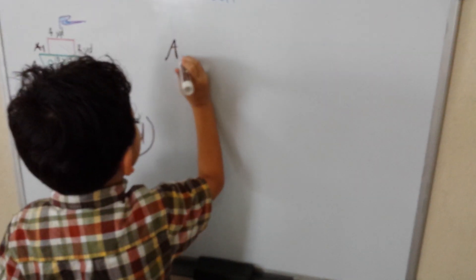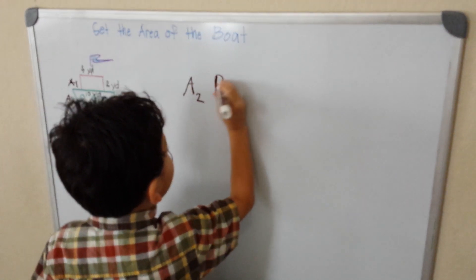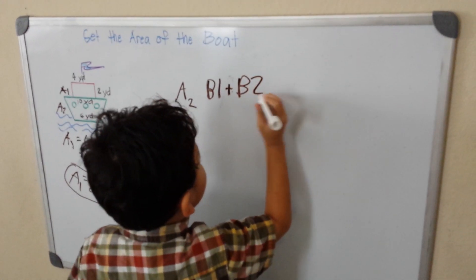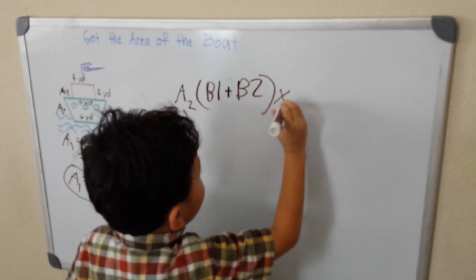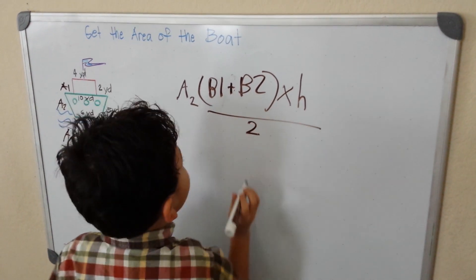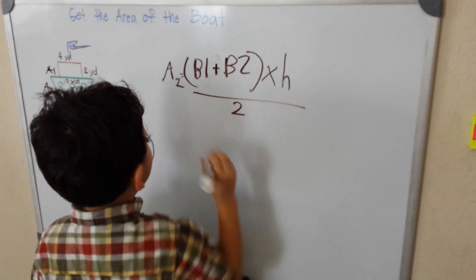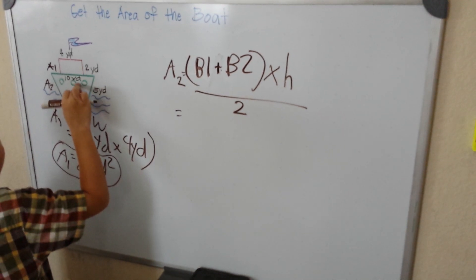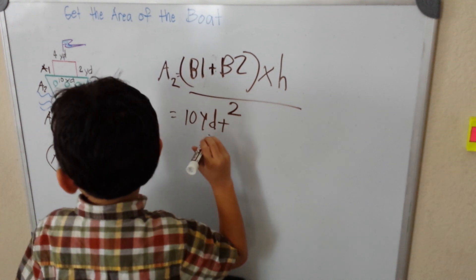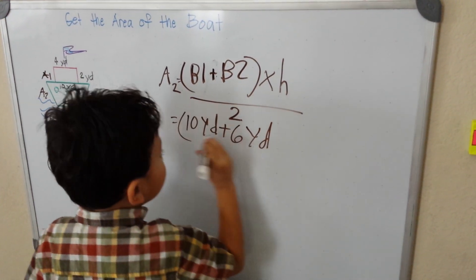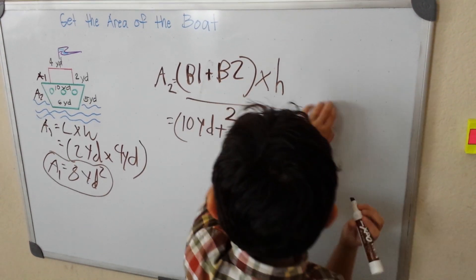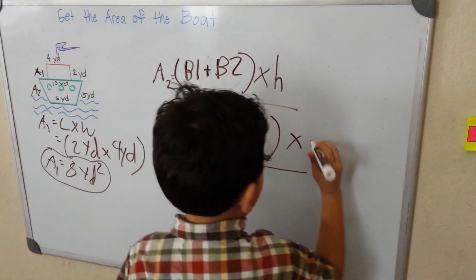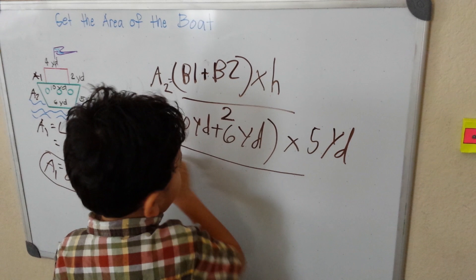Now I can put in here the area two. Now we have B1 plus B2, and then we multiply by the height and then we divide it by two. Now I know this is a tricky one. We have our B1 and our B2, so we just have B1 ten yards plus our six yards. And then we multiply by height, and we get five yards. So that's our height and then we divide it by two.